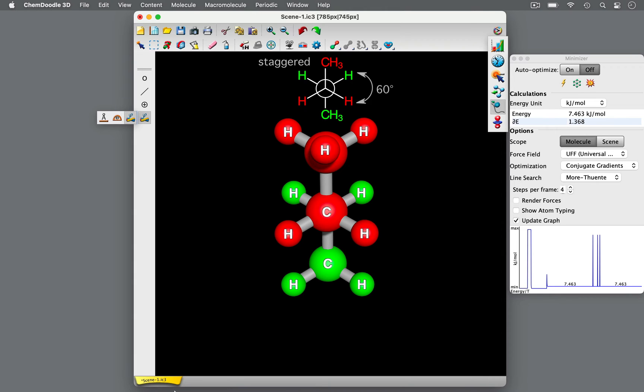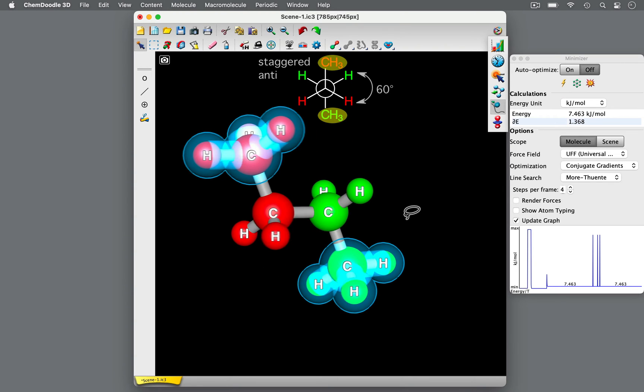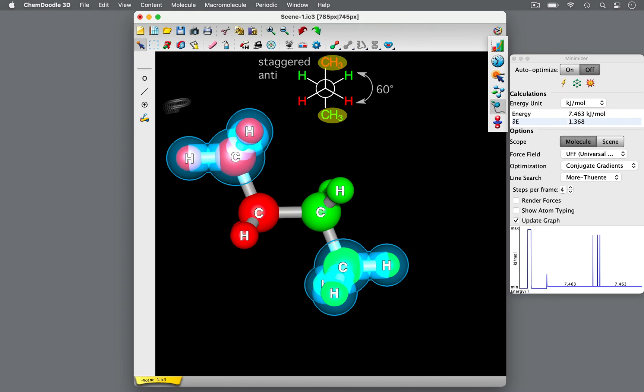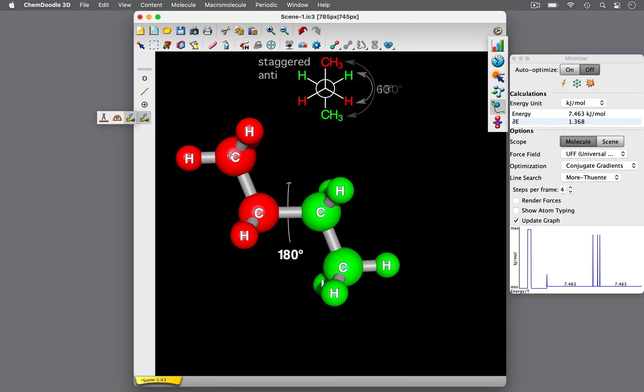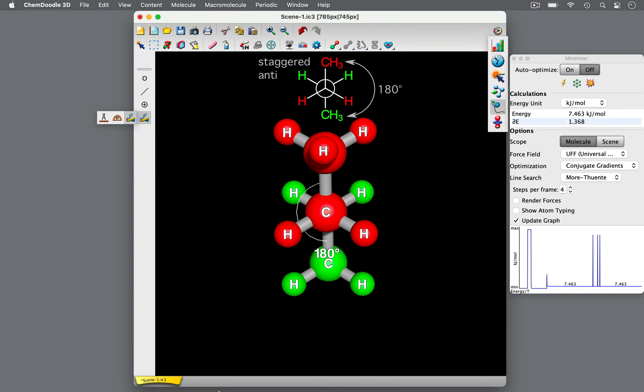This specific staggered conformer of butane is the anti-conformation. In this conformer, the two largest substituents, the methyl groups, are positioned opposite each other, as far from each other as possible, with a dihedral angle of 180 degrees. Consequently, the anti-conformation is the lowest energy conformation of butane.